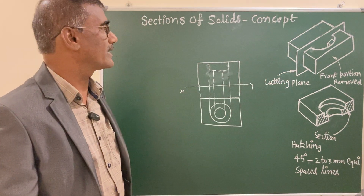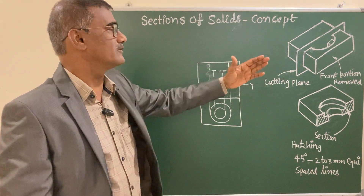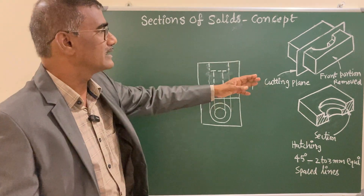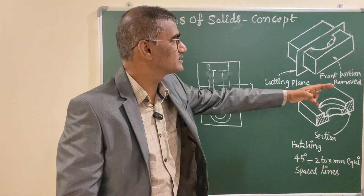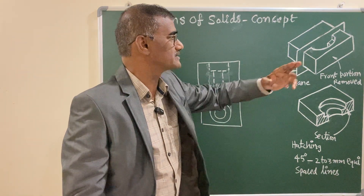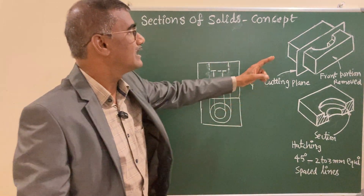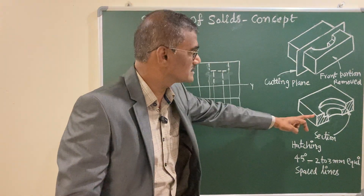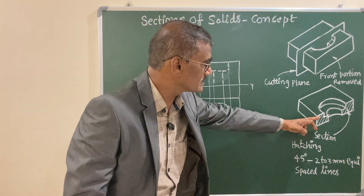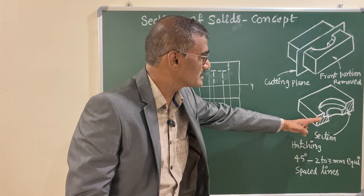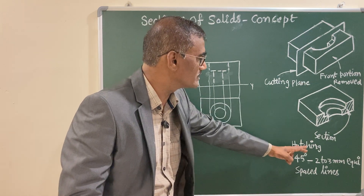The cutting plane, or section plane, splits that solid into two halves. The portion between the cutting plane and the observer is assumed to be removed. After removing, the section appears, and the contact between the cutting plane and the solid you are going to indicate with hatching.